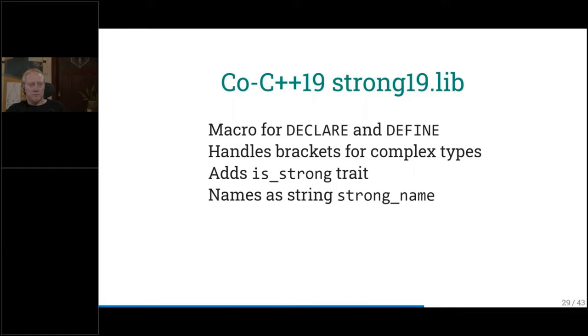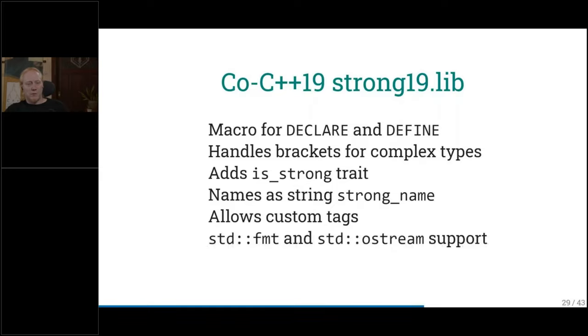And we also overloaded standard format, standard ostream. So you can print your type values. And it's also not just printing the value itself. It's also printing the name of the type. And we also have support for less and hash if you demand so. So not every type has to support it. But every type that uses define strong has to be comparable.